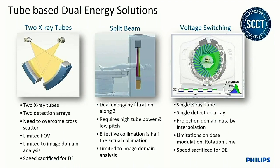The second approach is a split beam, where a filtration at the source splits the beam into two halves along the axis of the patient. The first half goes at a lower energy with softer filtration, and the second half at higher energy with harder filtration. To do dual energy by this method you need to run at a low pitch so that each half of the beam can sample the patient — essentially half the pitch or half the collimation. Again, this is limited to image domain analysis.